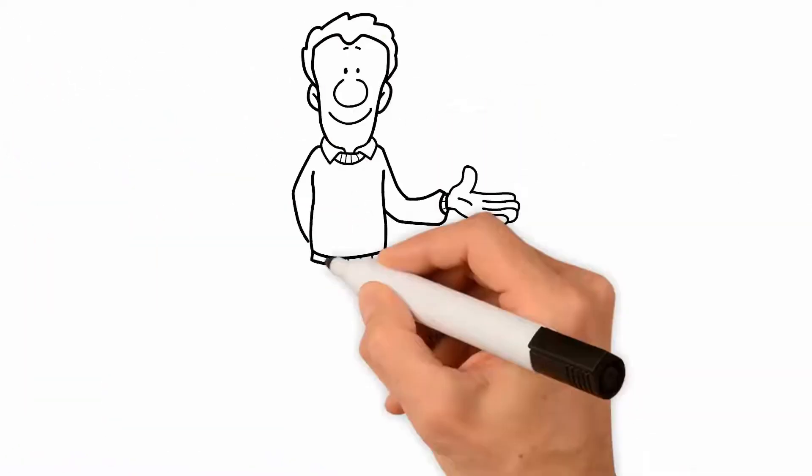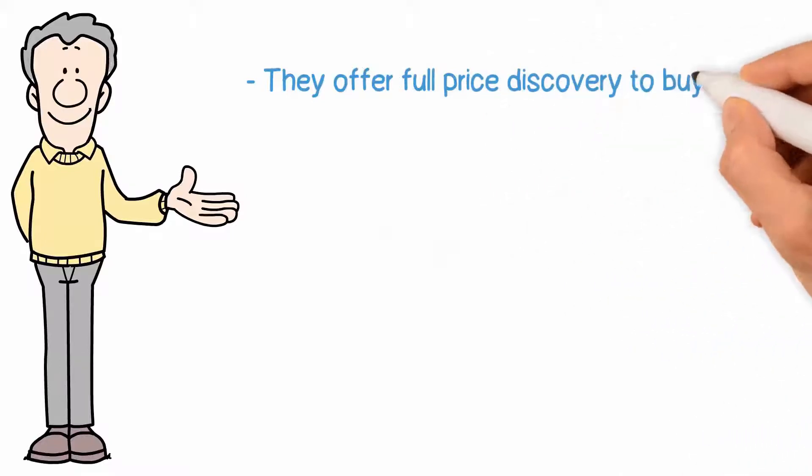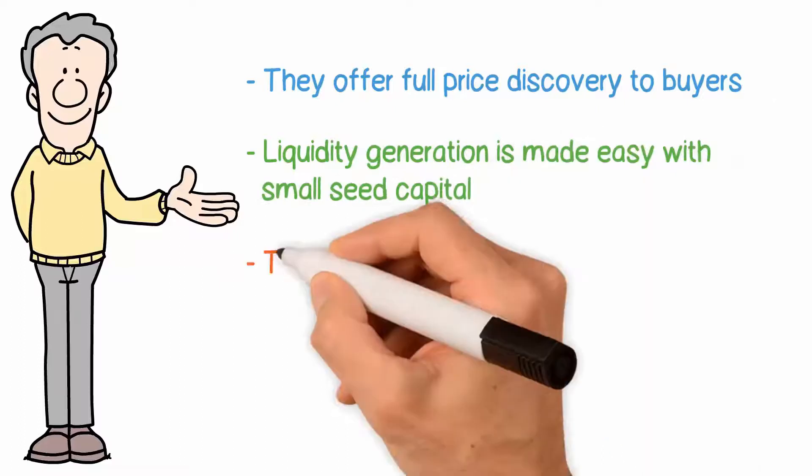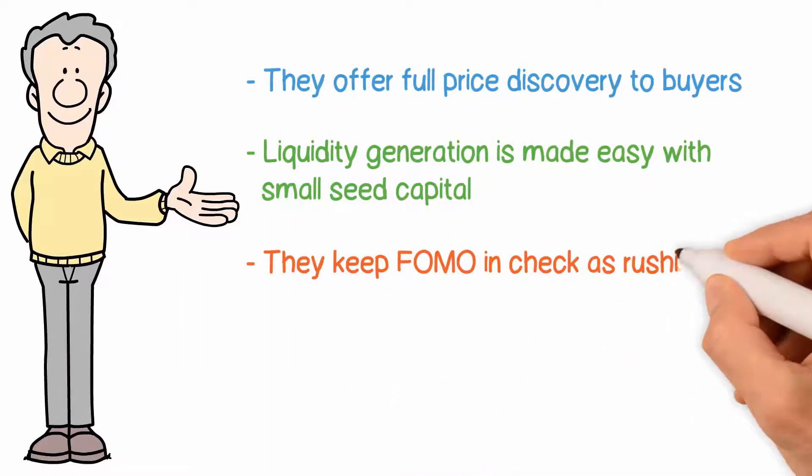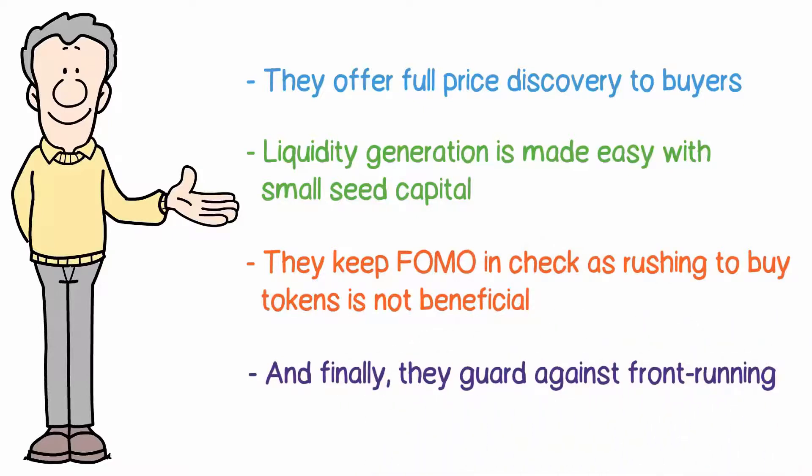Let's go over the top benefits of LBPs. They offer full price discovery to buyers. Liquidity generation is made easy with small seed capital. They keep FOMO in check as rushing to buy tokens is not beneficial. And finally, they guard against front-running.